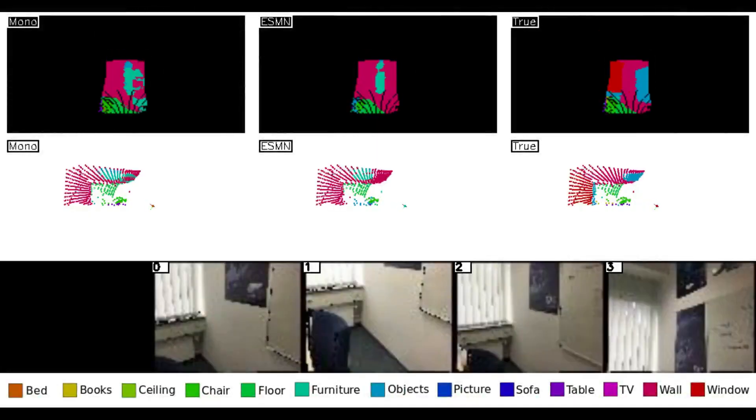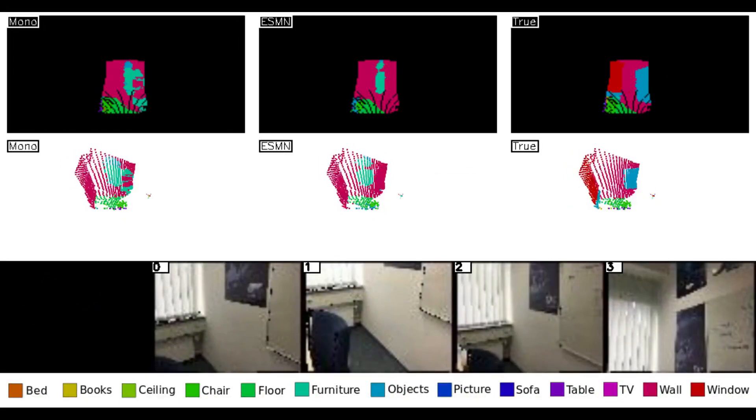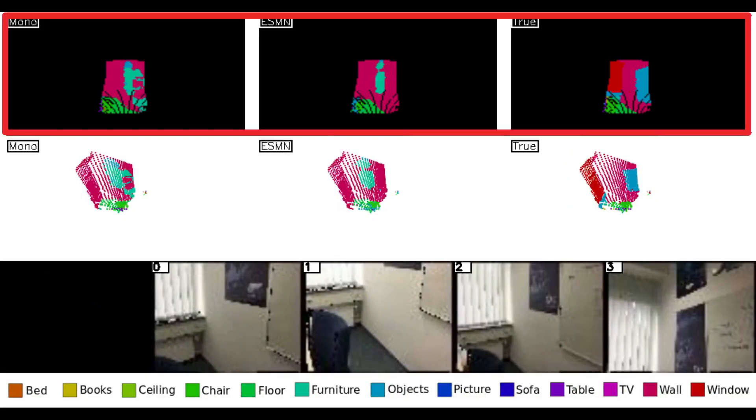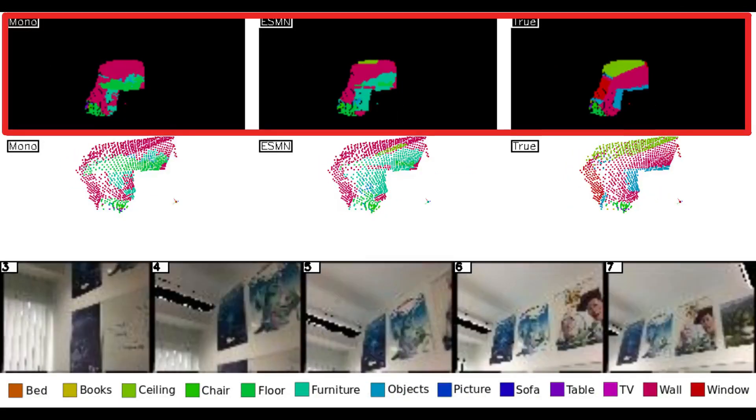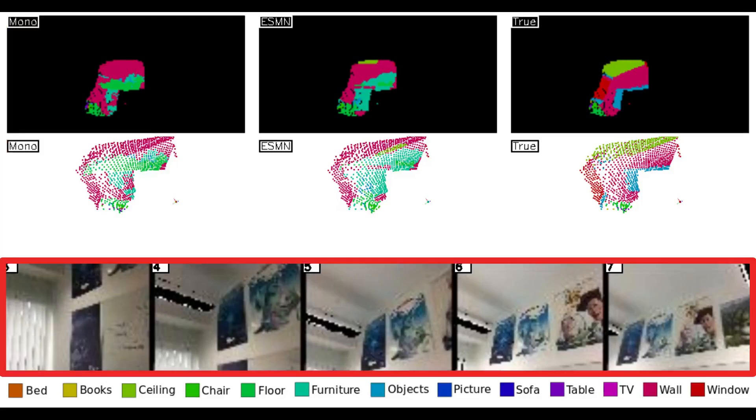Finally, we also apply the module to object segmentation. Here, we show the omnidirectional segmentation images at the top, point clouds in the middle, and the raw image stream at the bottom.